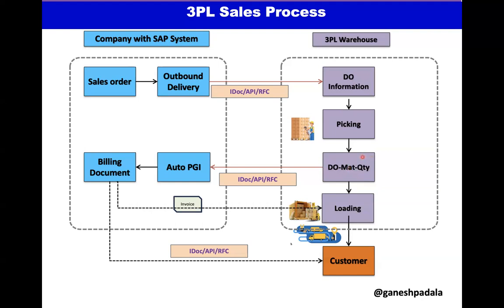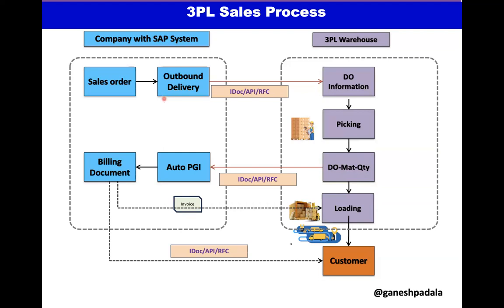Some challenges arise here: the delivery was created for 100 quantity, but based on physical stock they want to send only 90. They need to send that quantity information. Technically, we either accept partial quantities or not. If the business requirement is that the 3PL cannot issue less than the delivery quantity, then they can't send a different quantity. If the agreement allows a difference, they send that information so we first change the delivery quantity from 100 to 90, then do PGI. Both systems' inventory needs to be interfaced and verified.